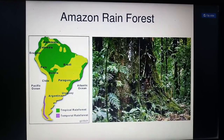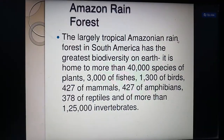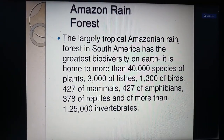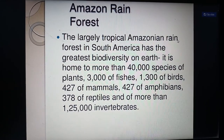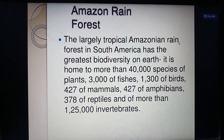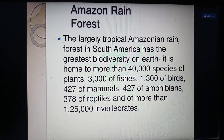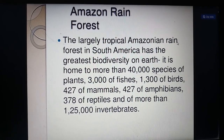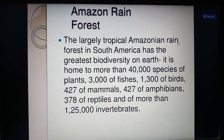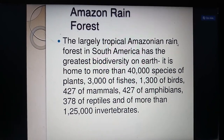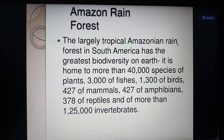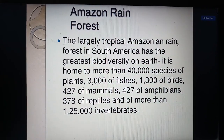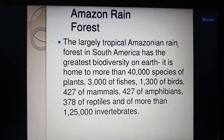The large tropical Amazonian rainforest in South America has the greatest biodiversity on Earth. It is home to more than 40,000 species of plants, 3,000 of fishes, 1,300 of birds, 427 of mammals, 427 of amphibians, 378 of reptiles, and more than 125,000 of invertebrates.